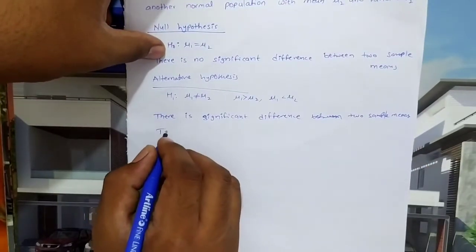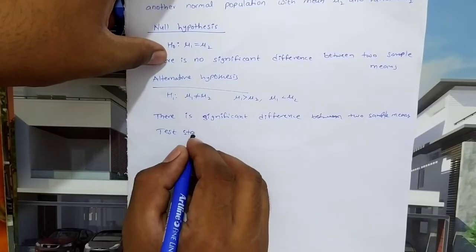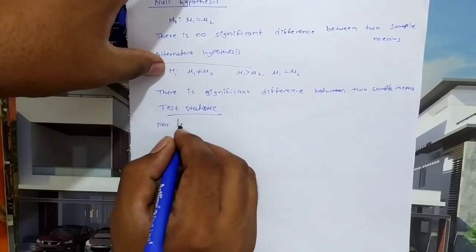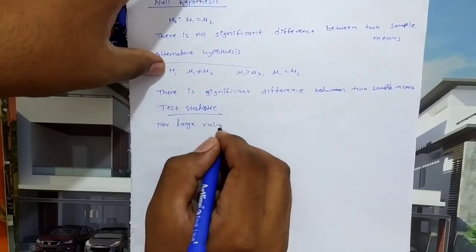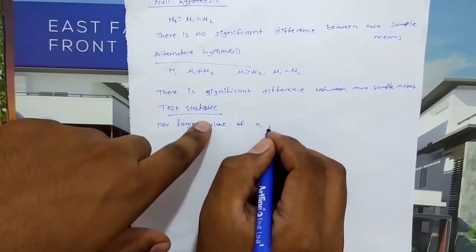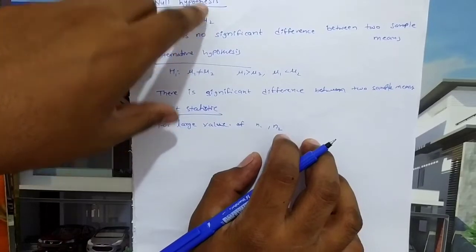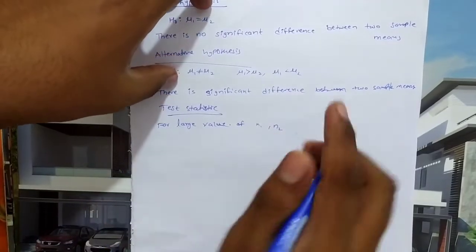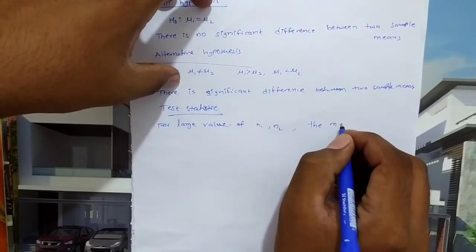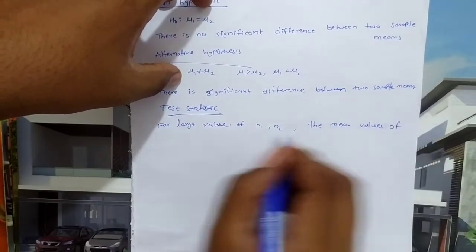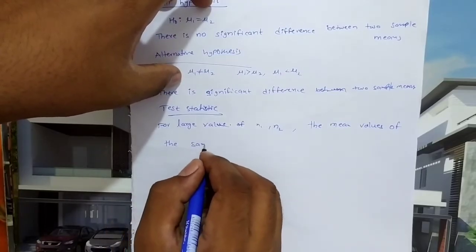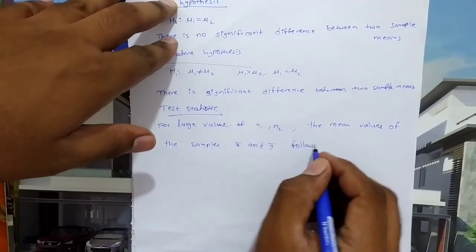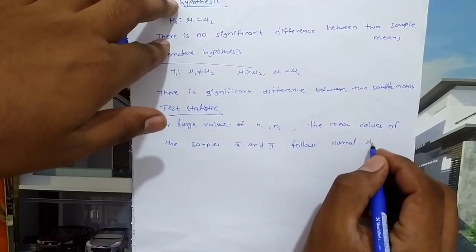Now, test statistic for large values of n1 and n2: the mean values of the samples, that is x bar and y bar, follow normal distribution. For large samples (n greater than 30), the distribution tends to normal distribution.